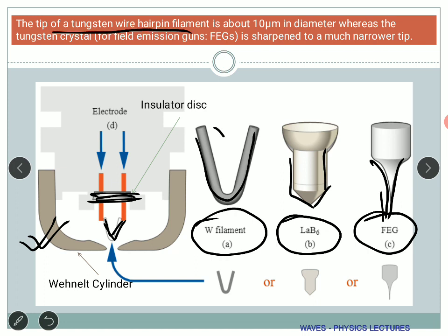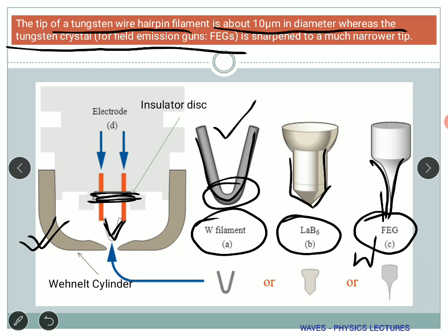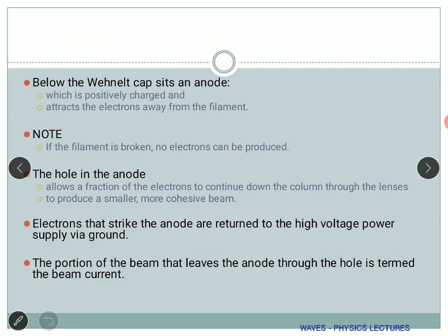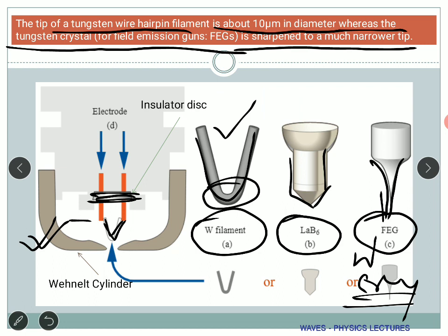The tip of a tungsten wire is about 10 micrometers in diameter — it's just enlarged in the diagram. The tungsten crystal used in the field emission gun is sharpened to a much narrower tip in the nanometer range. The Wehnelt cap sits with an anode — the anode is positively charged and attracts electrons away from the filament. Any stray electrons flowing toward the positively charged anode are captured there.